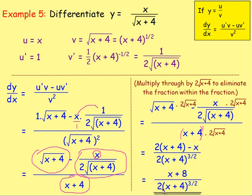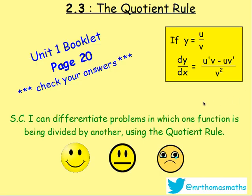And that is all 5 examples. Give these questions a shot — it is 2.3, the Quotient Rule, in the Unit 1 book on page 20. There are plenty of questions and answers. If you still need the workbook, email me and I will give you a copy. Good luck. Bye!